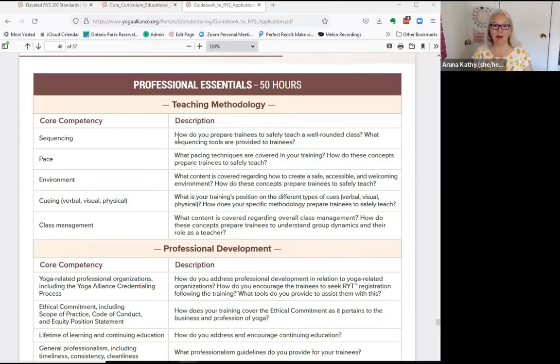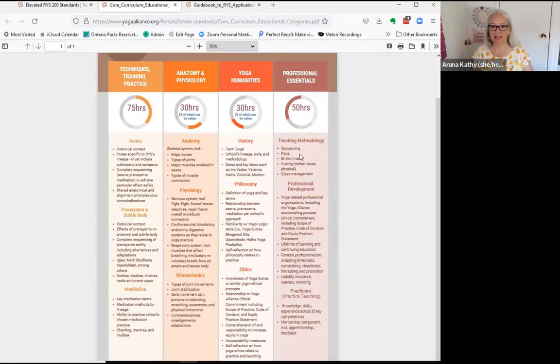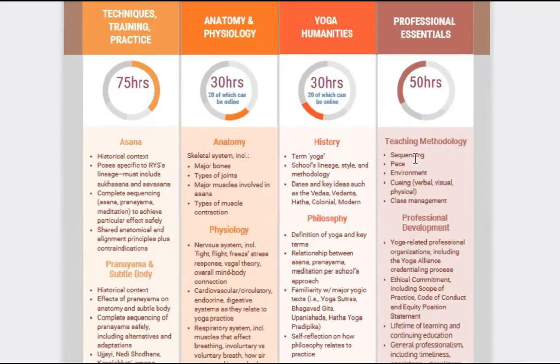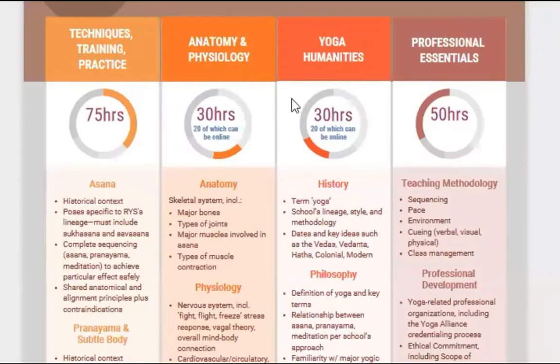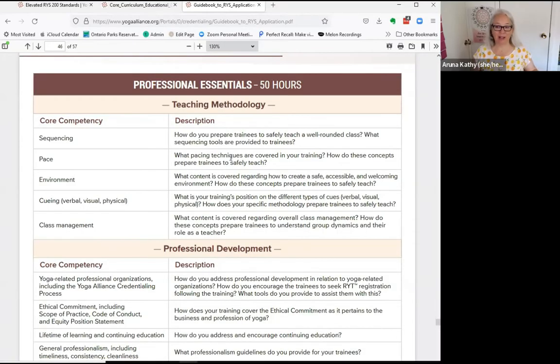When Yoga Alliance in the core competencies guidebook asks how do you prepare trainees to safely teach a well-rounded class and what sequencing tools are provided — that's exactly what we're talking about. When you look at a yoga lesson plan, you hit a lot of core competencies: asana, a whole sequence, meditation depending on your style. As the trainer writing a manual, you're deciding which parts are asana, meditation, pranayama, sequencing — and you're also hitting on pace, environment, cueing, and class management. The guidebook has a lot of requirements around all of this.